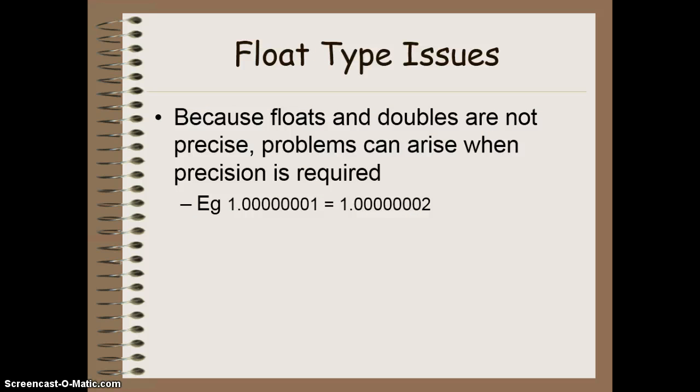Because they're not precise, we can have problems when precision is required. So for example, if I take a look at these two float values, I can only be exact to 8 significant digits. So this number is in fact identical according to Java to this number here, even though they're actually different.